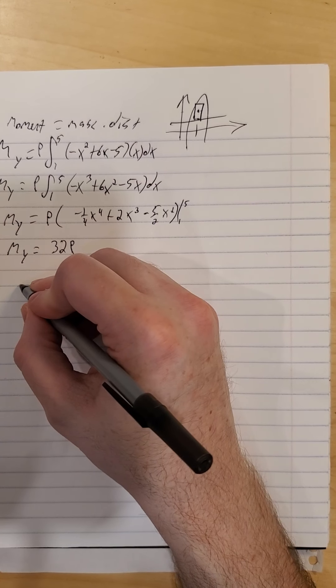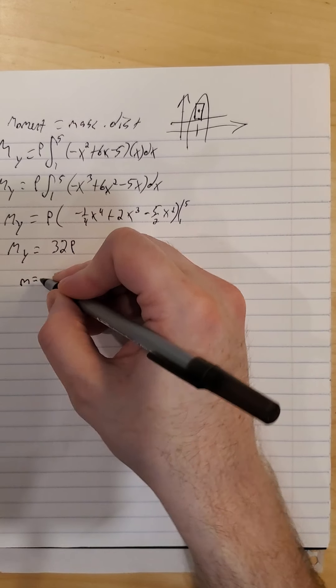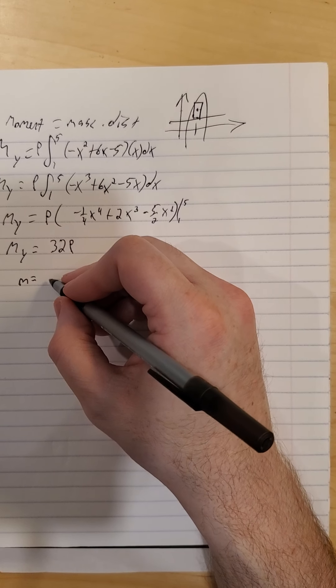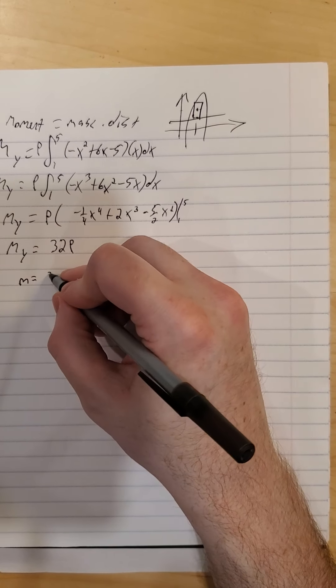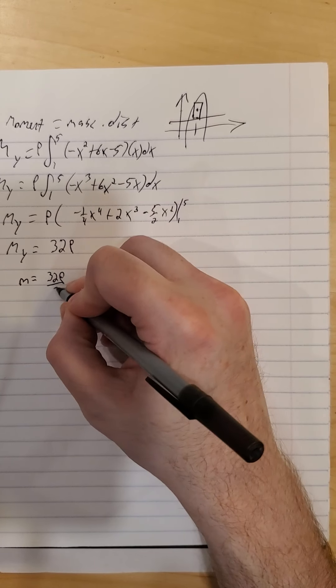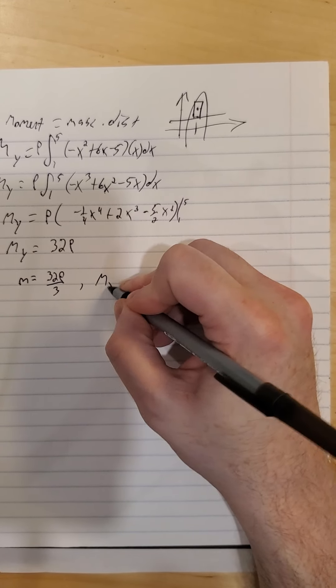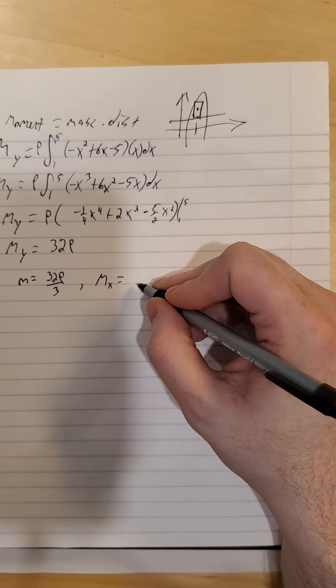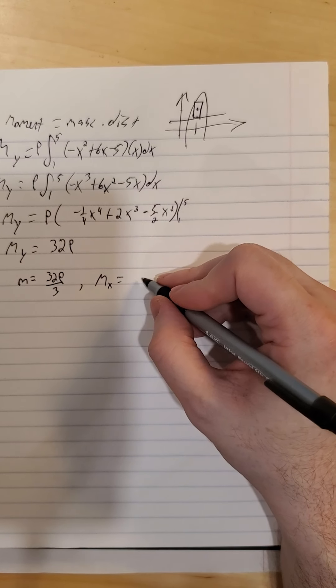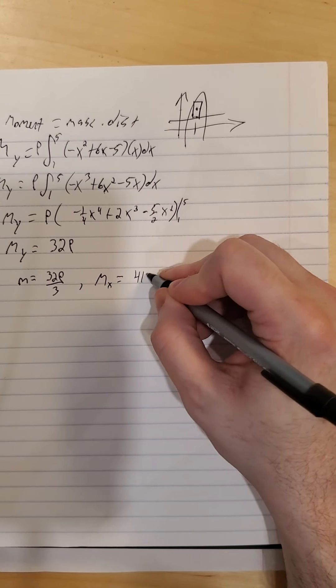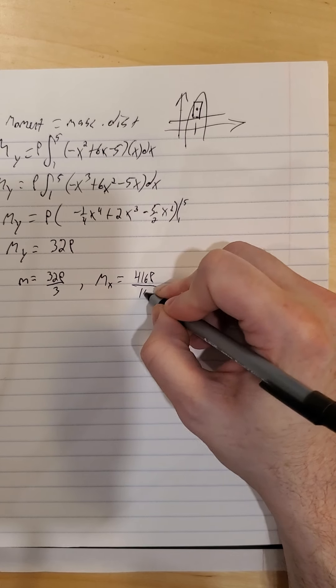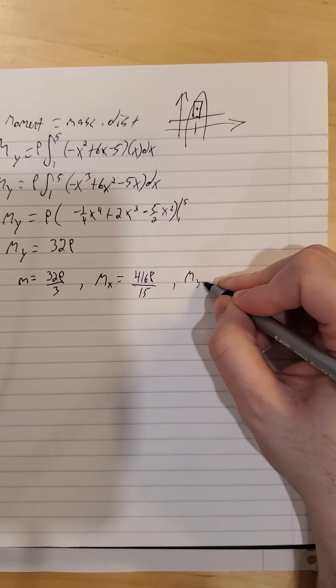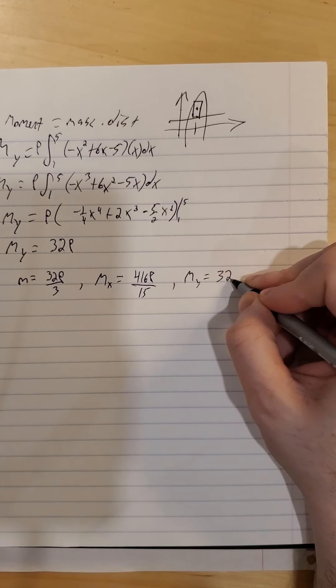So, what we know so far, our mass, if you recall, was 32 rho over 3. A moment about x ended up at 416 rho over 15. And, a moment about y, we have that right there, is 32 rho.